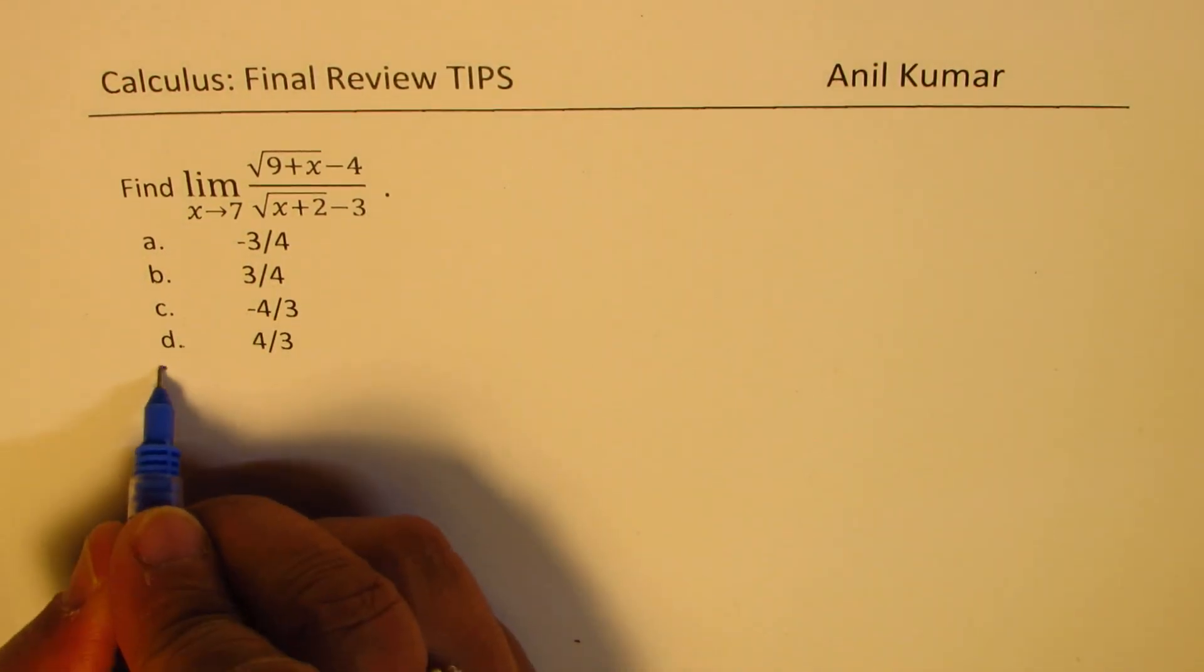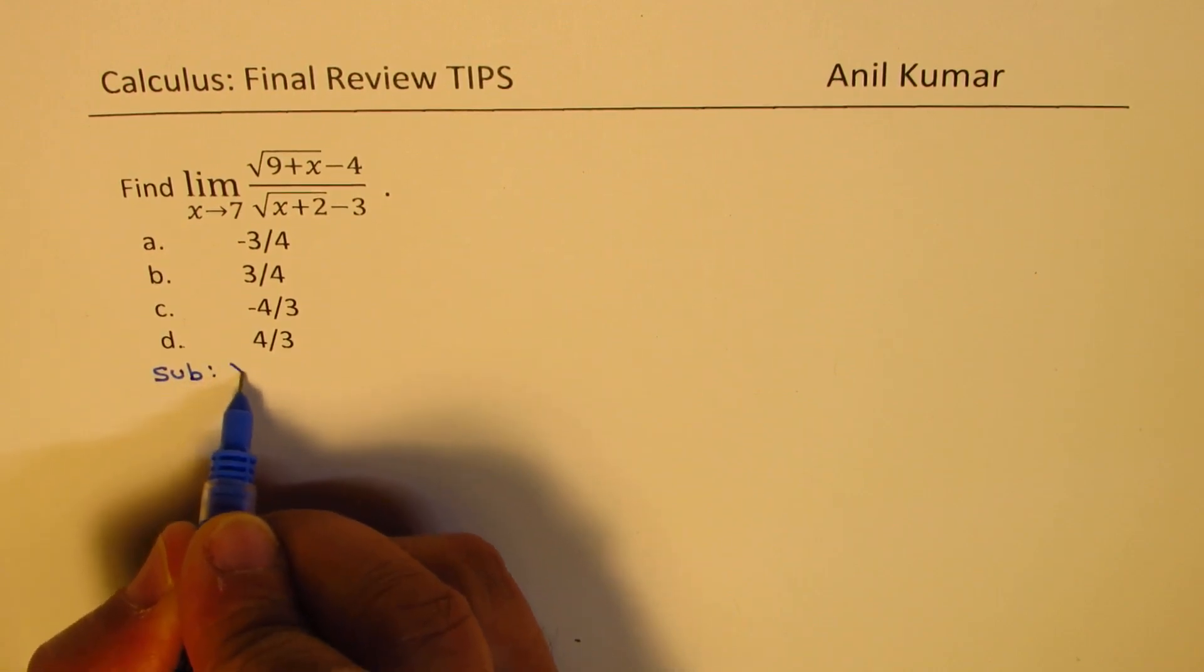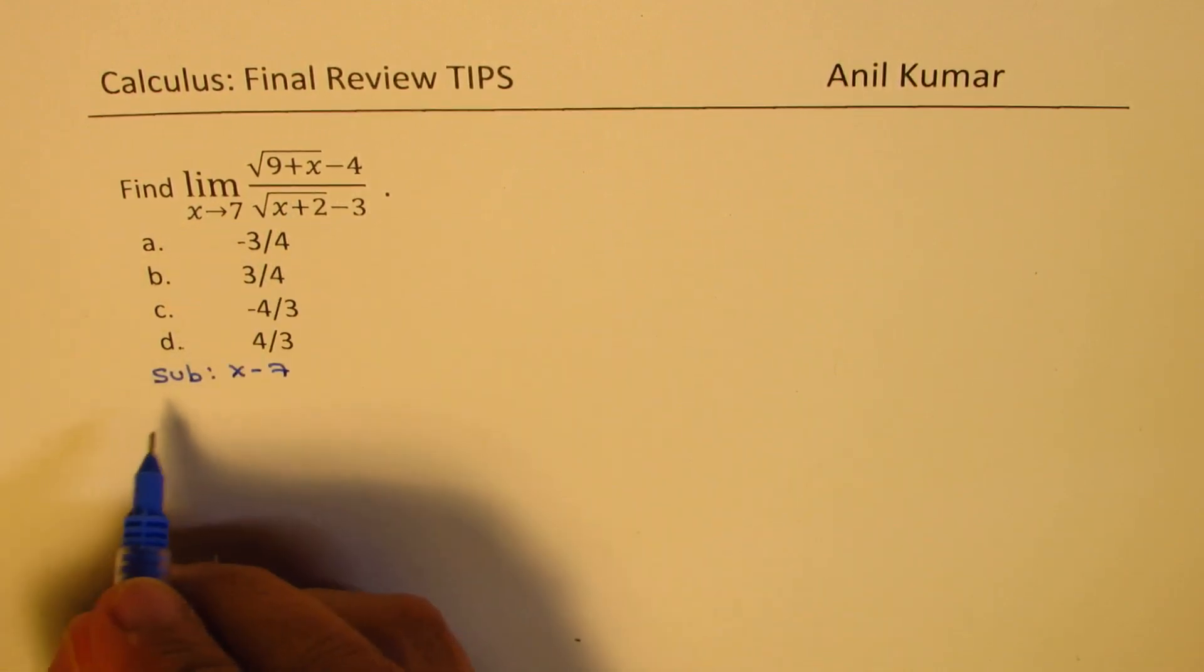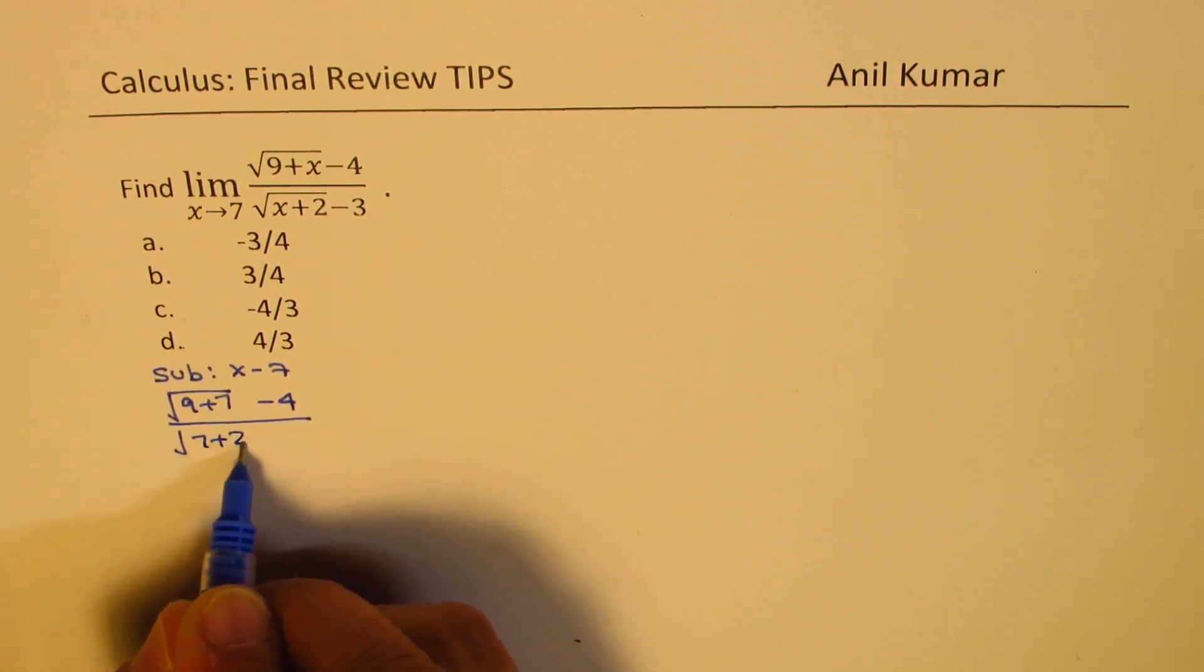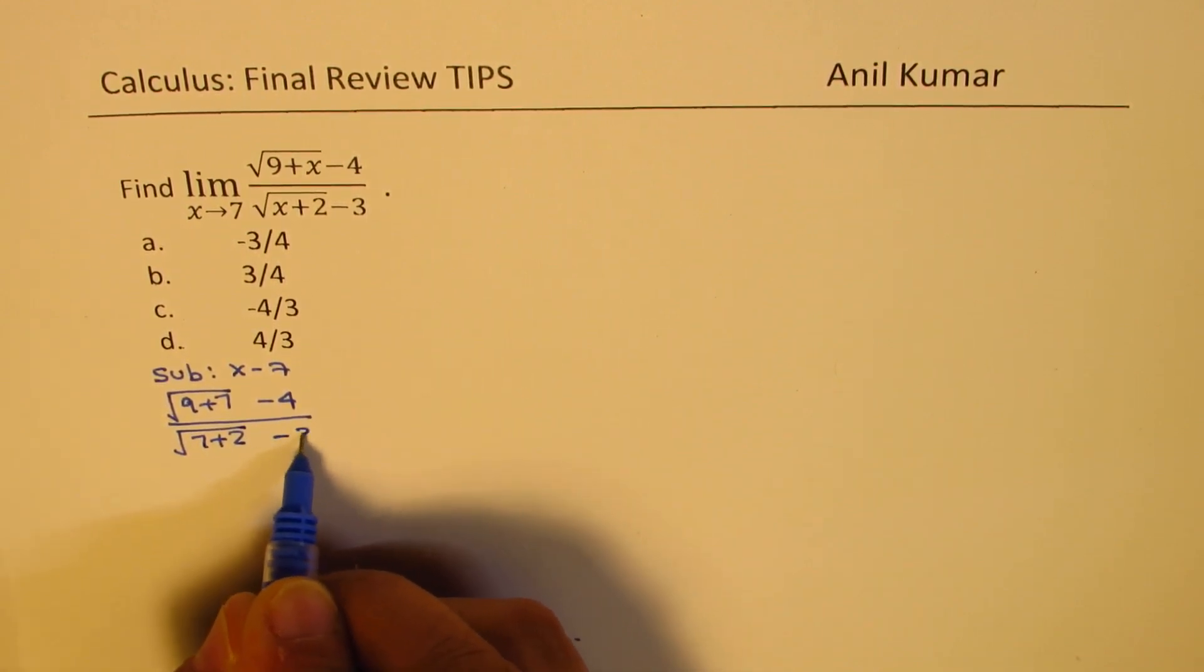Now here, if I substitute x equals to 7, what do I get? I get square root of 9 plus 7 minus 4 over square root of 7 plus 2 minus 3.